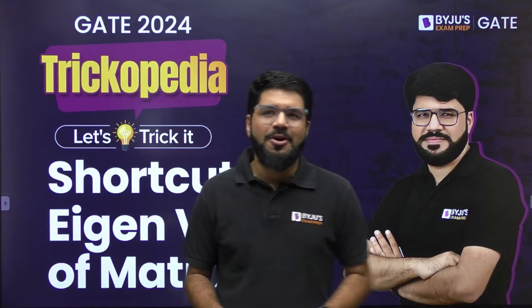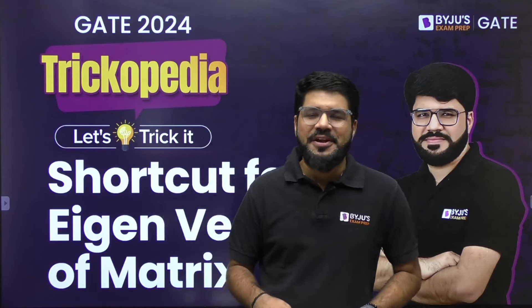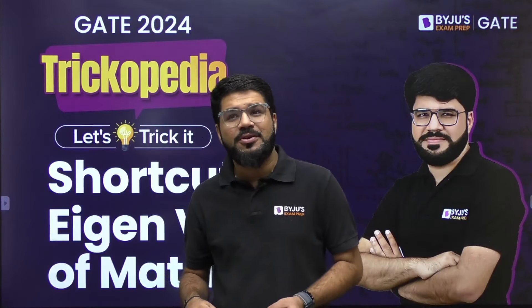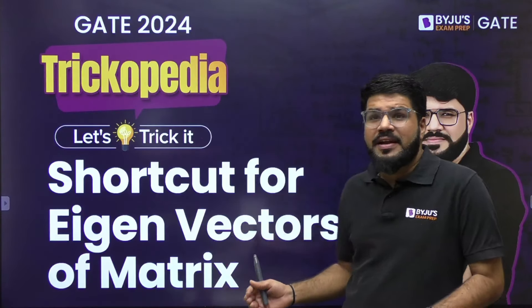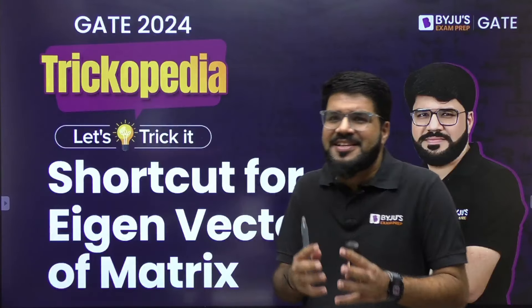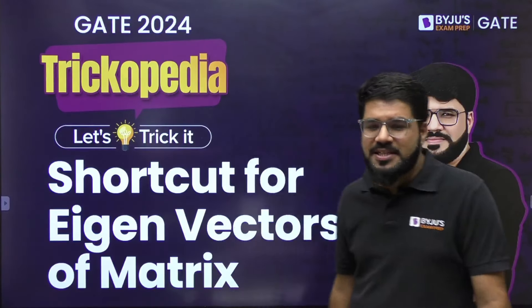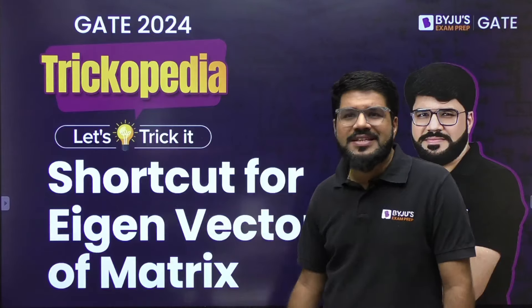Hey guys, welcome to the next video of Trickopedia. In an earlier video, I gave you the shortcut to find eigenvalues of a 3×3 matrix. But when it comes to eigenvectors, the conventional method is definitely time-taking and lengthy, and you can't spare that much time in the examination. So looking into any eigenvector question, what is the shortest approach?